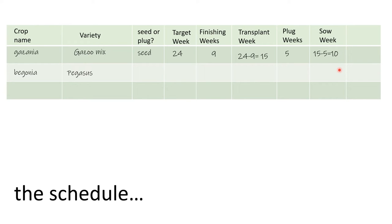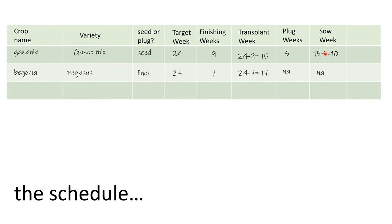For begonia Pegasus, which I buy in as a liner — a large plug already grown out — I want to sell it on the same target week. It takes 7 weeks to get there, so my transplant week is week 17. There's no plug week or sow week for this one because I'm not buying seeds. As I go down and get hundreds or maybe thousands of entries, Excel lets me sort by the transplant week column to get my earliest ones at the top, creating a transplant schedule to hand out to employees. I can do the same for sow week.